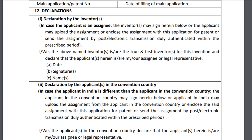When you file a patent application, you have to submit Form 1 along with all other documents and fees. And if you look at Clause 12 of Form 1, it clearly says that the above named inventors are True and First Inventors for this invention, and declares that the applicant herein is their assignee or legal representative. This clause has to be signed by the True and First Inventor.